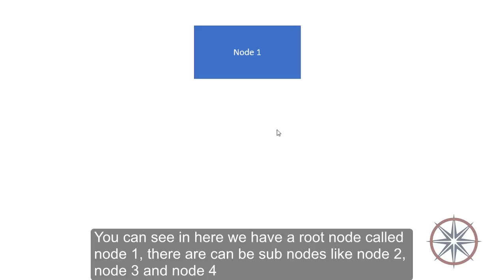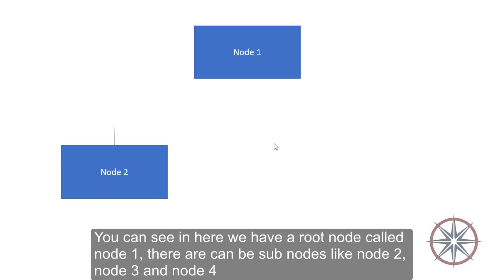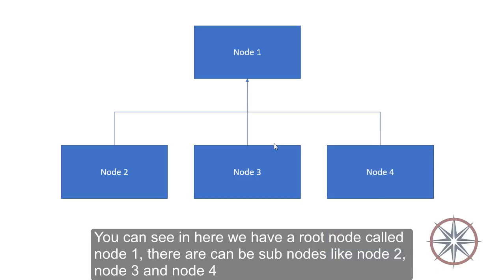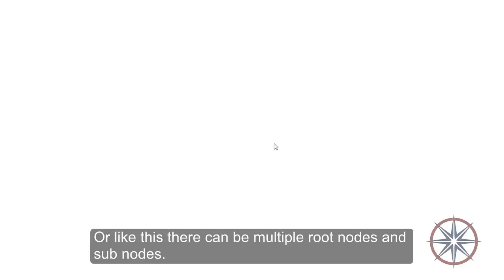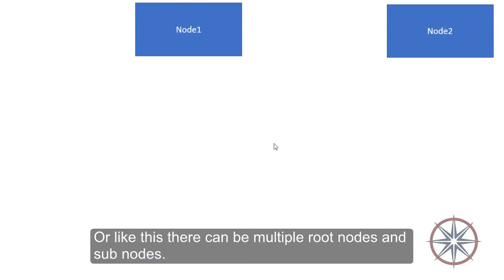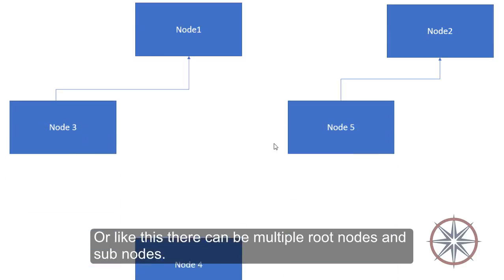You can see in here we have a root node called Node 1, and there can be subnodes like Node 2, Node 3, and Node 4. Or like this, there can be multiple root nodes and subnodes.